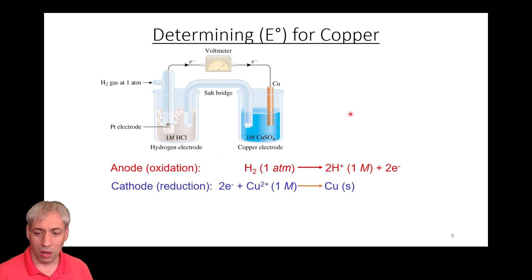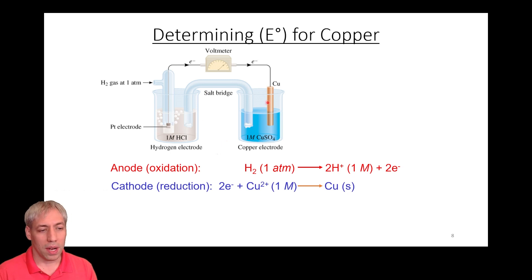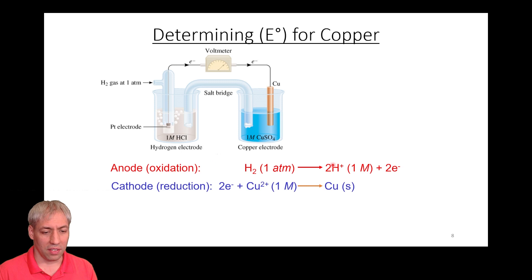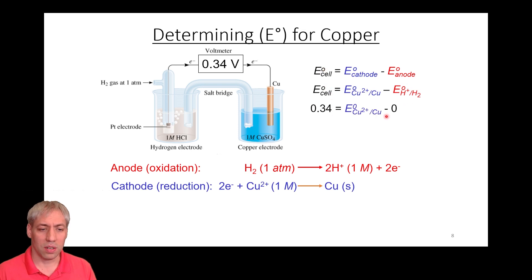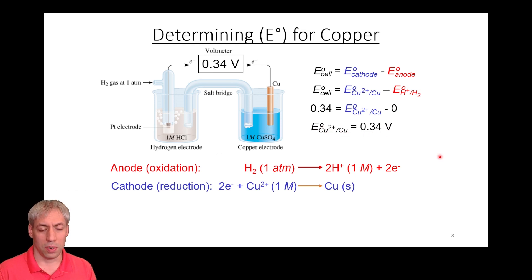We can do the same with copper. Pairing SHE with copper and copper two plus — the cathode reduction reaction is Cu²⁺ + 2e⁻ → Cu solid. We measure 0.34 volts for this cell. Setting SHE as zero, we find that Cu²⁺/Cu has a standard potential of +0.34 volts.